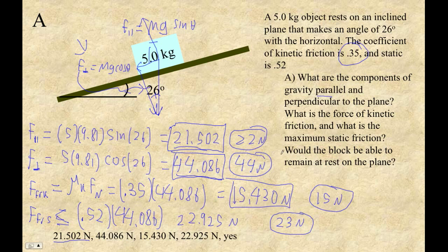Now, it does ask one question that's not just the algorithmic thing that we always do. The one question is, would the block be able to remain at rest on the plane? Well, the force acting down the plane is 21.502. So the parallel force down the plane would be trying to make it move. The static limit is 22.925. Well, the 21.502 is less than 22.925. And so the static force would just simply be up the plane equal to 21.502.